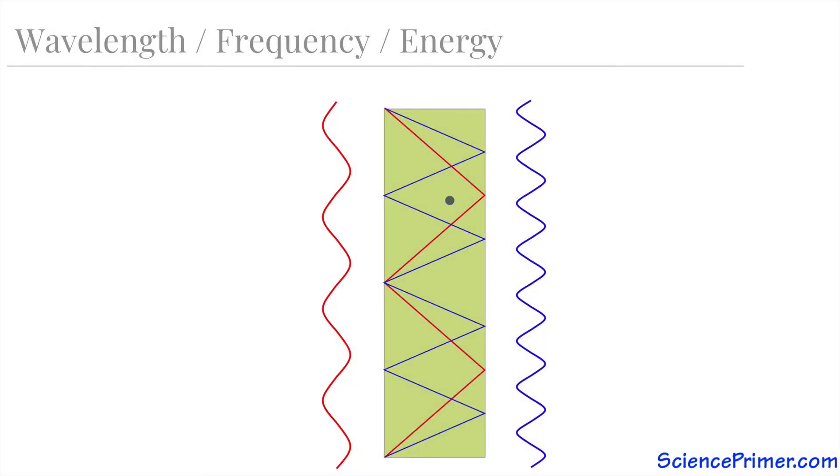If we then imagine randomly placing obstacles on the table, the longer path traveled by the blue ball makes it more likely that the blue ball will hit an obstacle and be moved off in another direction, failing to arrive at the top of the table.